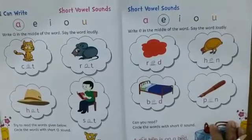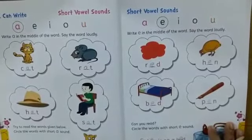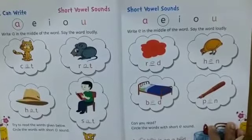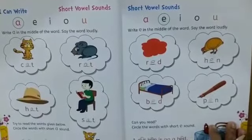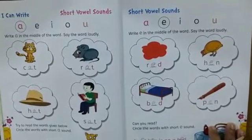A, E, I, O, U are the vowels and we learnt the E sound words, isn't it?